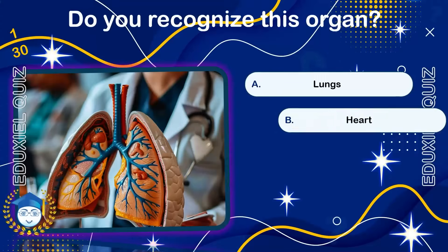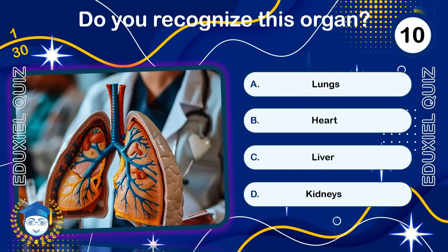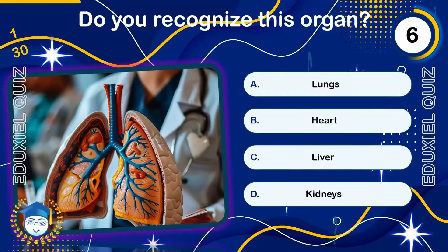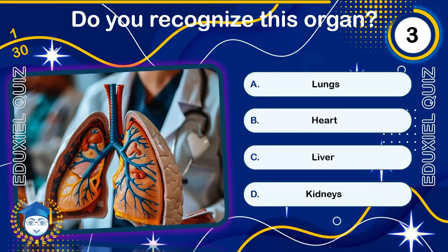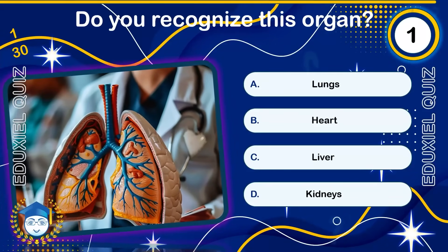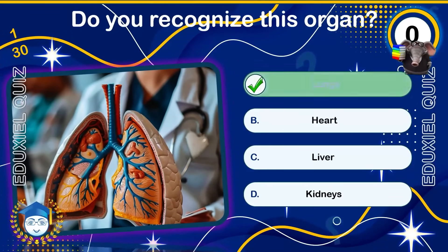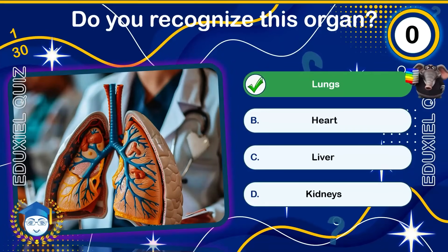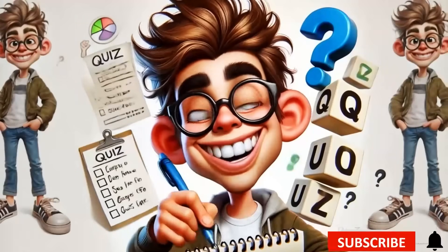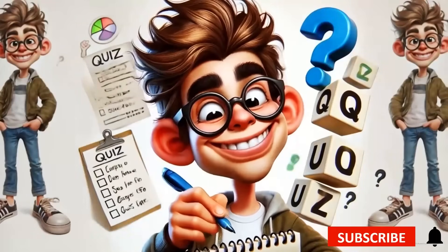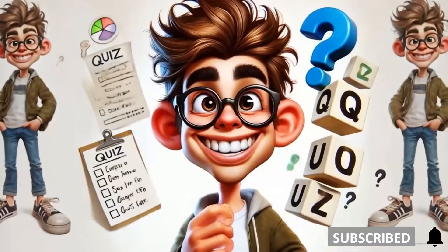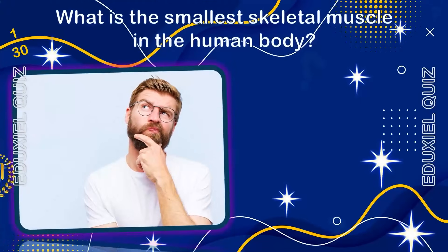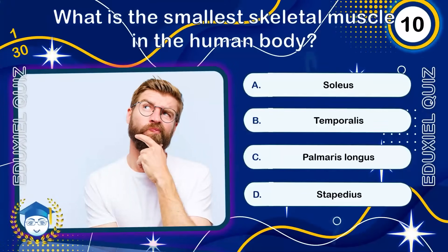In this quiz you'll have to answer 30 general knowledge questions about the human body. For example, do you recognize this organ? The lungs are responsible for removing carbon dioxide from the blood and adding oxygen to it. Before we dive in, don't forget to keep track of your score, share it in the comments, and hit that subscribe button. What is the smallest skeletal muscle in the human body?